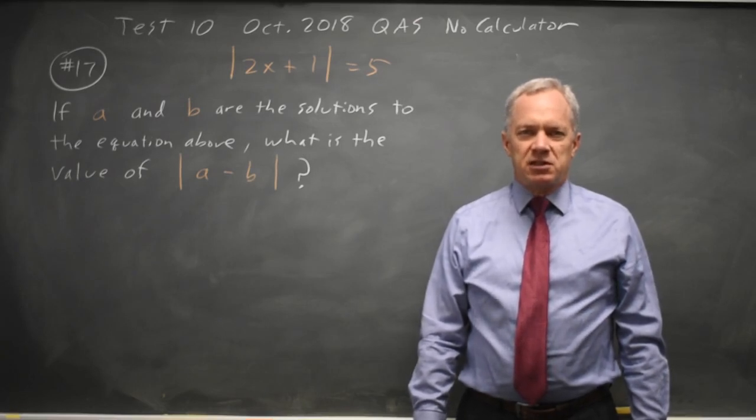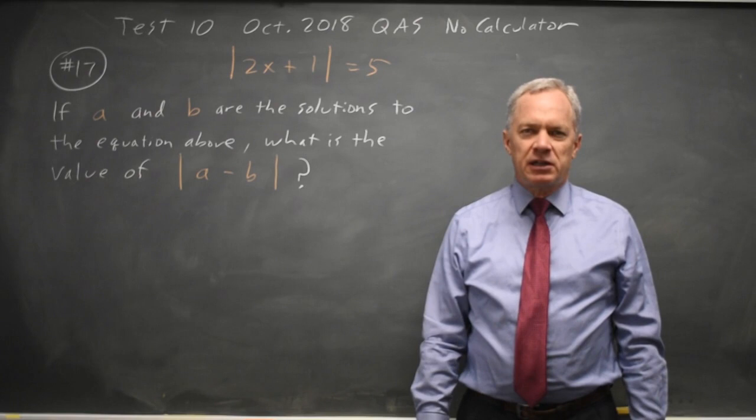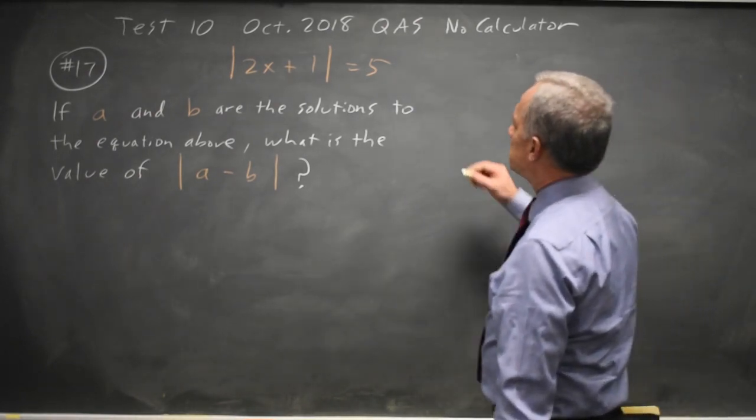This is question 17. The College Board is asking us to solve an absolute value equation and then find the absolute value of the difference between the two solutions.